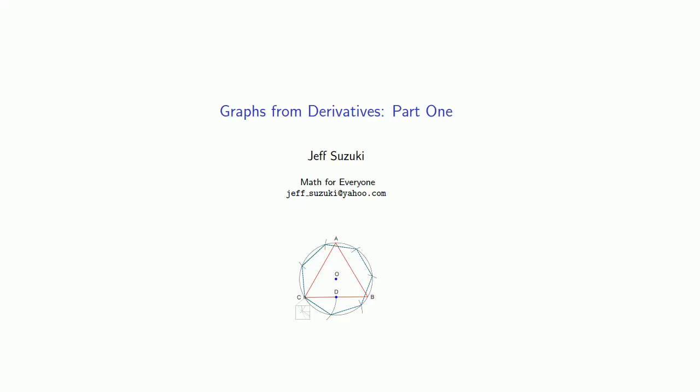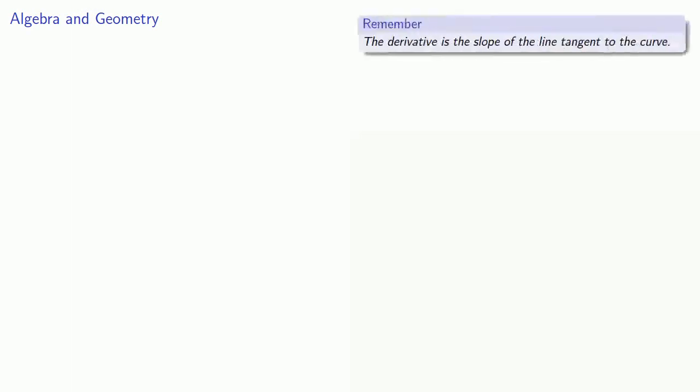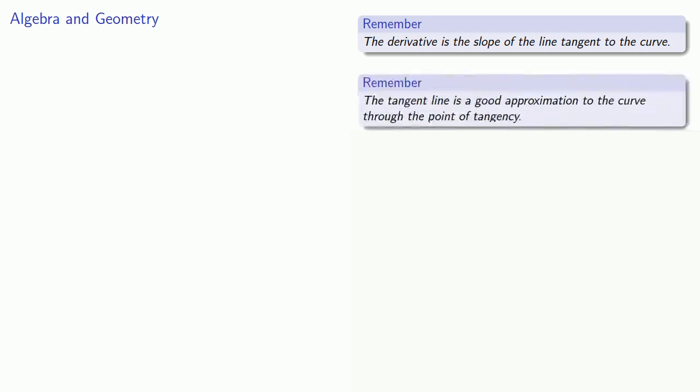Another way we can use the derivative is to sketch the graph of a function. There are two things you want to remember about the derivative. First, the derivative is the slope of the line tangent to the curve at the point of tangency. And second, the tangent line is a good approximation to the curve through the point of tangency.